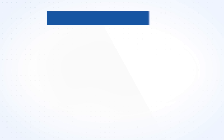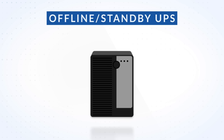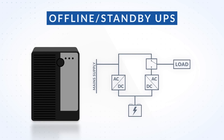The simplest of the three is the Offline, or Standby, UPS. The power from the mains is connected straight to the load and the charger. In the case of mains failure or power fluctuations, the switch changes the supply from mains to the battery.